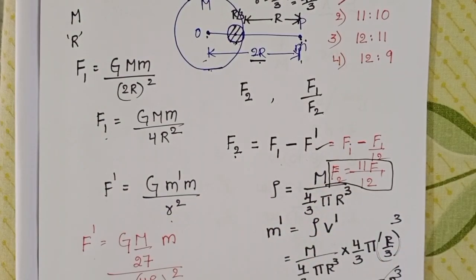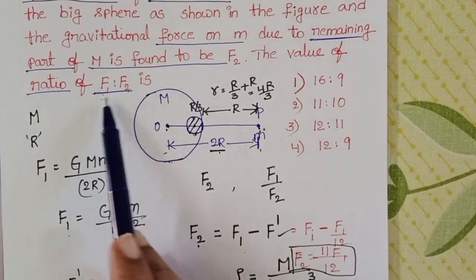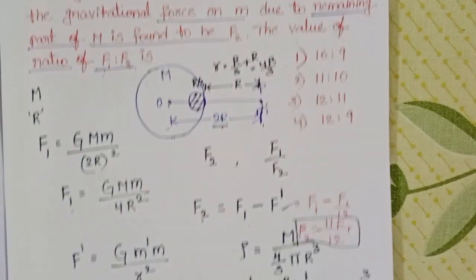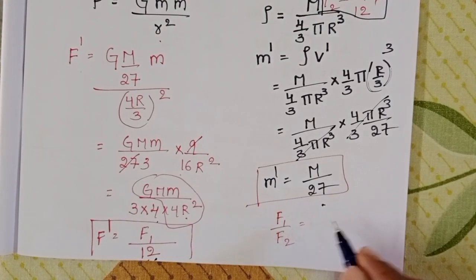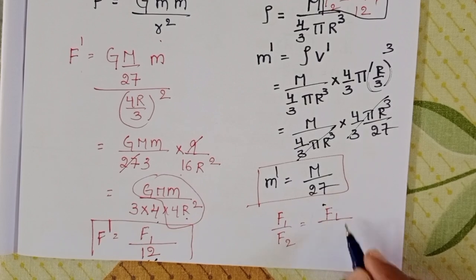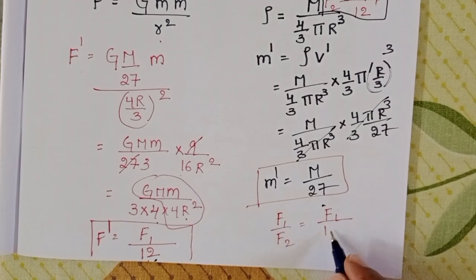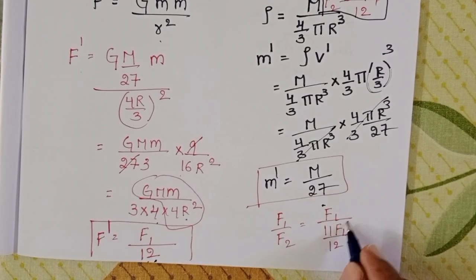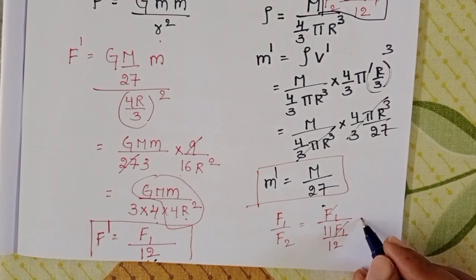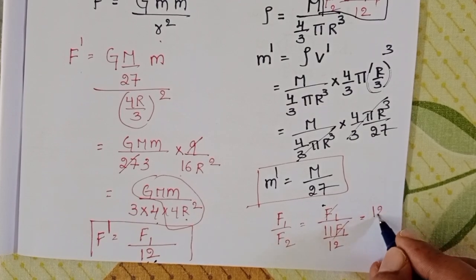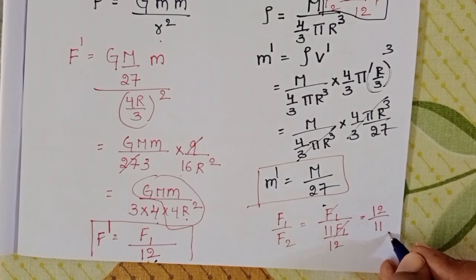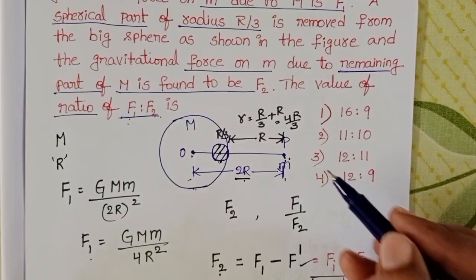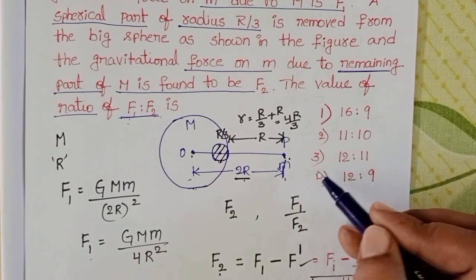Finally, we find the ratio F1 to F2. F1/F2 = F1 / (11F1/12). F1 cancels, giving 12/11. So F1 : F2 = 12 : 11. The third option is correct.